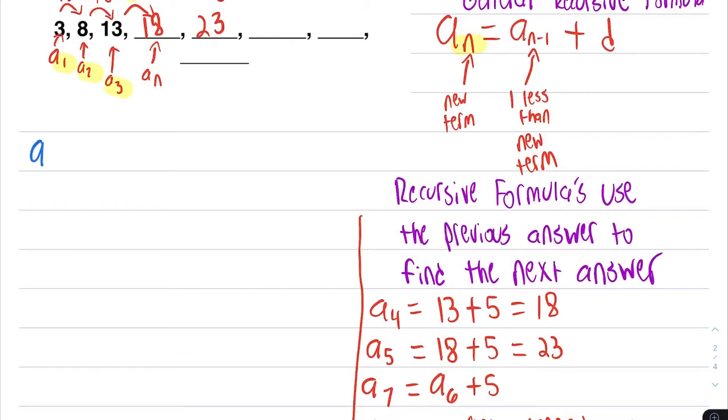What if I want to find A24? That one, if we used recursion, we would need 23 of the previous answers to find that one.